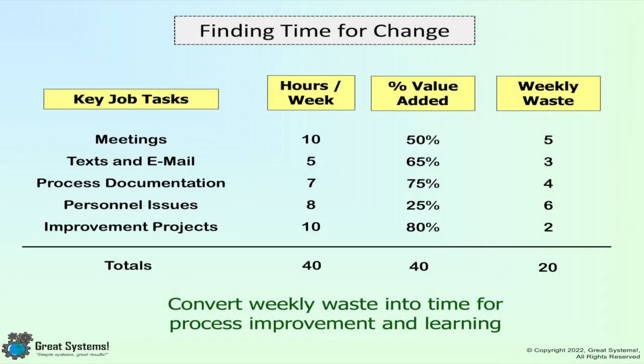Finding time for change. This simple table can be used to target certain areas that will give you time for change. Begin by listing the key job tasks, then estimate the hours per week you spend on each of those tasks. Estimate the percent of each task that is value added, do the math, and find out how many hours of weekly waste you live with.